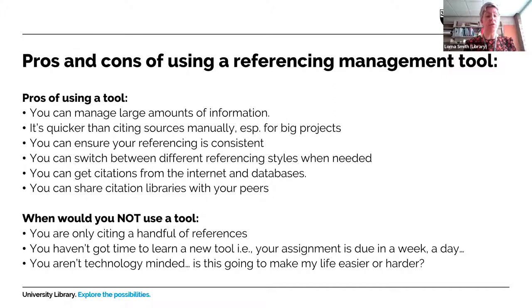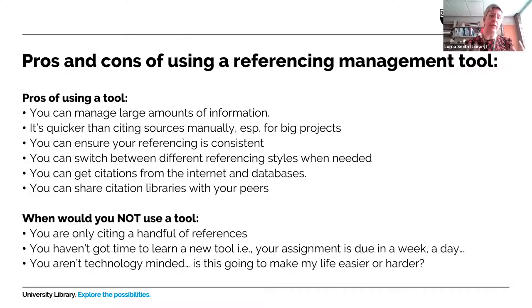When would you not use a tool? If you're only citing a handful of references — maybe you're an undergrad in first or second year and you're not dealing with many, many references — then maybe you just need to do it manually or in a Word document. You don't have time to learn a new tool. This is a huge one, because quite often we'll teach students about reference management tools and maybe they have looming deadlines and think it'll fix all their reference problems.